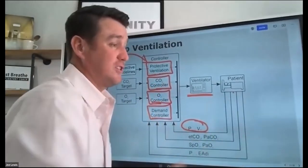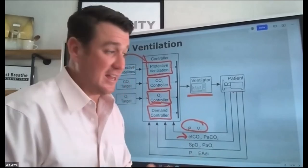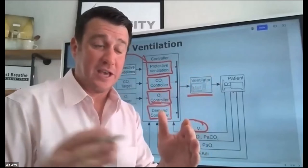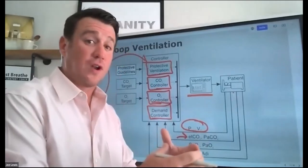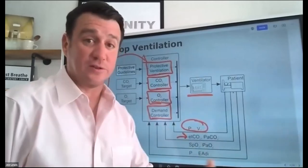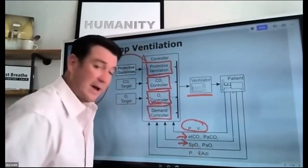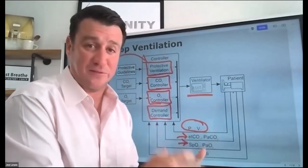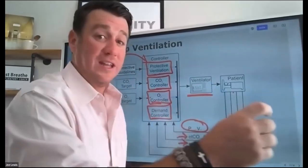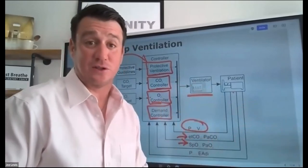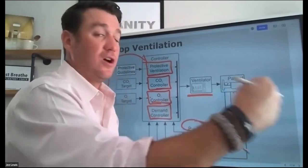How does the ventilator control CO2? It can make changes based on end-tidal CO2 connected to the vent. It can take a set of parameters and adjust based on changes in end-tidal CO2, which correlates to arterial CO2 in most situations. For oxygen control, it's simple: SpO2. If the pulse ox is connected to the vent and SpO2 falls below set parameters, the vent increases or decreases FiO2 based on the pulse oximetry parameters you've set, which correlates to arterial oxygenation.